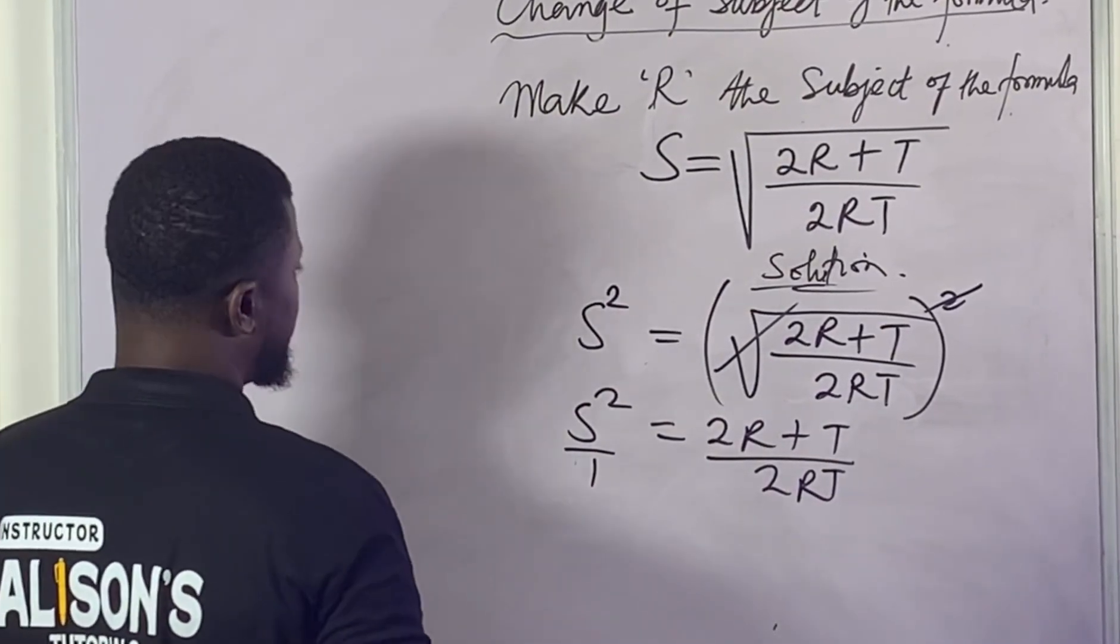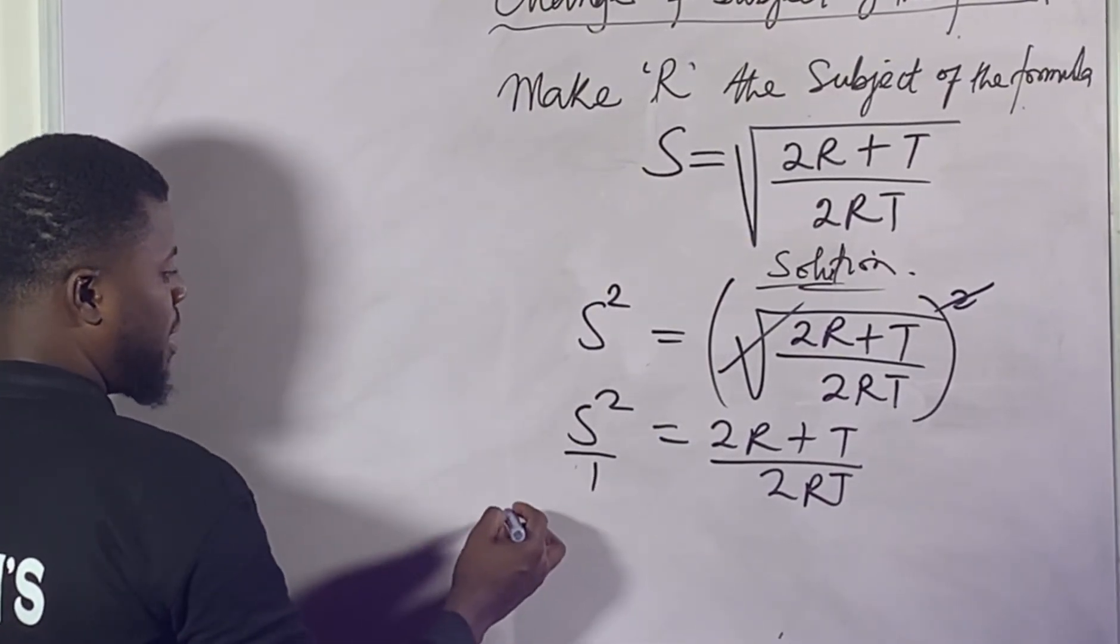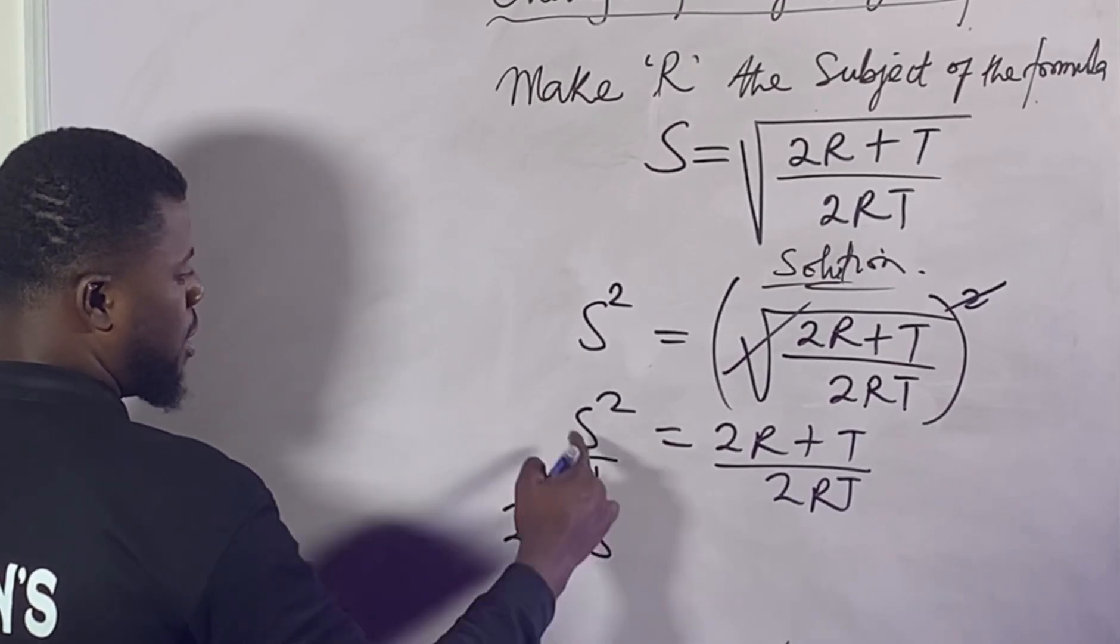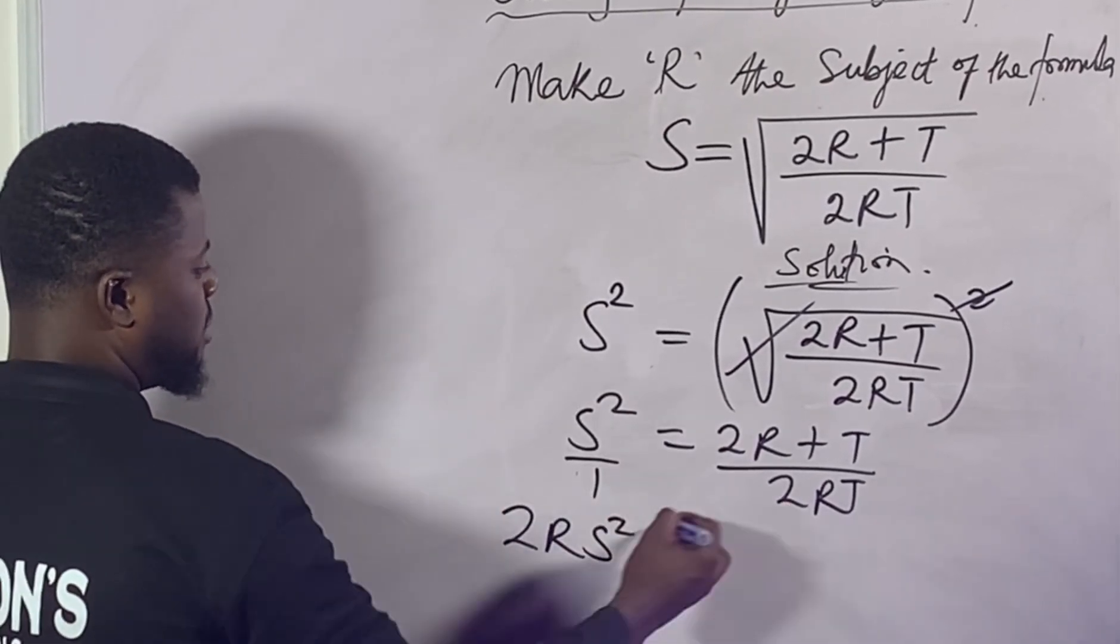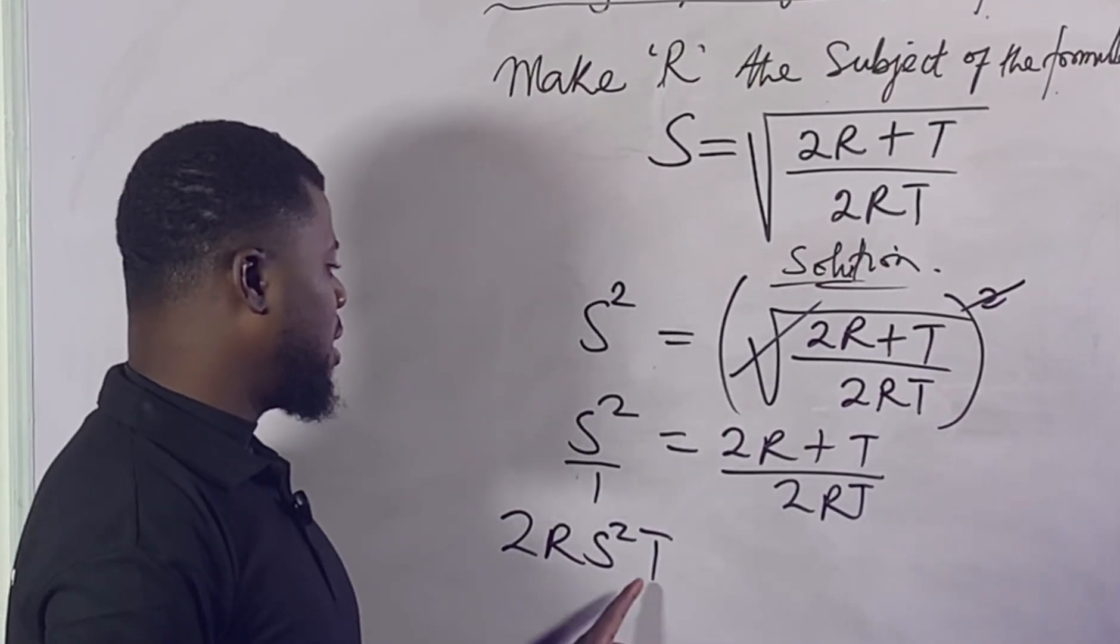If this cross multiplies by this, or this multiplies by this, this multiplies by this, that's what we are supposed to do right now. So if this multiplies this, we should be having 2RS²T.